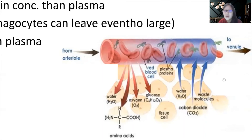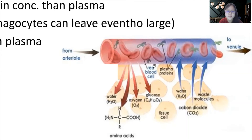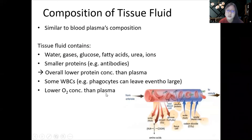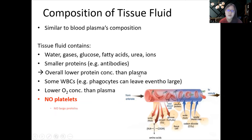Tissue fluid near the venous end will have a higher concentration of carbon dioxide compared to tissue fluid near the arterial end, because by that point cells have released all their carbon dioxide, which then diffuses back into the capillaries. To summarize what tissue fluid lacks compared to blood plasma: there are no platelets, no large proteins (too large to pass through endothelial gaps), and no red blood cells (also too large).